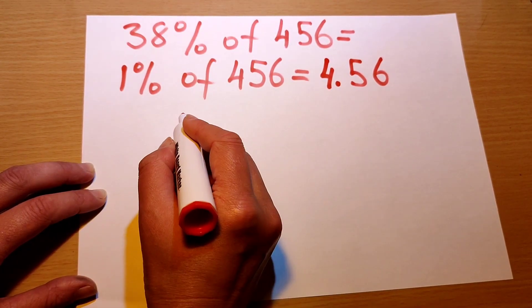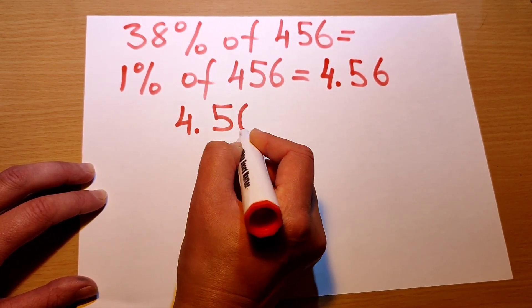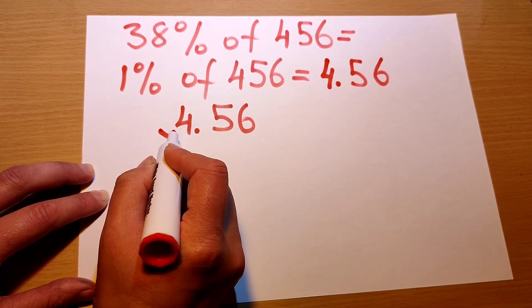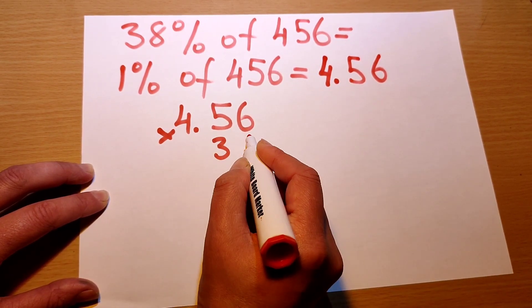Now to find 38 percent, you just need to multiply the 1% of the number by 38. So 4.56, which is 1% of the number, multiply by 38.